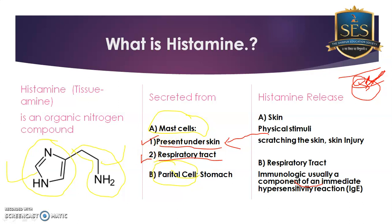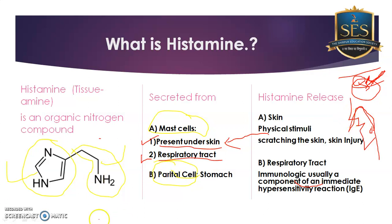Mast cells are also located in the respiratory tract. To check this: when a dust particle enters the nose, sneezing and coughing start immediately. This sneezing and coughing indicates that the mast cells in the respiratory tract have been activated. Whenever something enters through the nose, mast cells release histamine, which triggers sneezing and coughing.